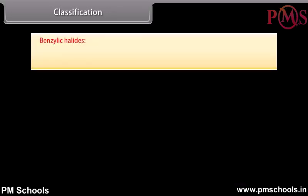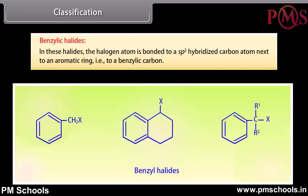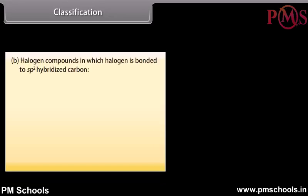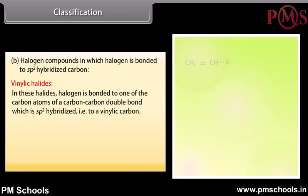Benzylic halides: in these halides, the halogen atom is bonded to a sp3 hybridized carbon atom next to an aromatic ring, that is, to a benzylic carbon.